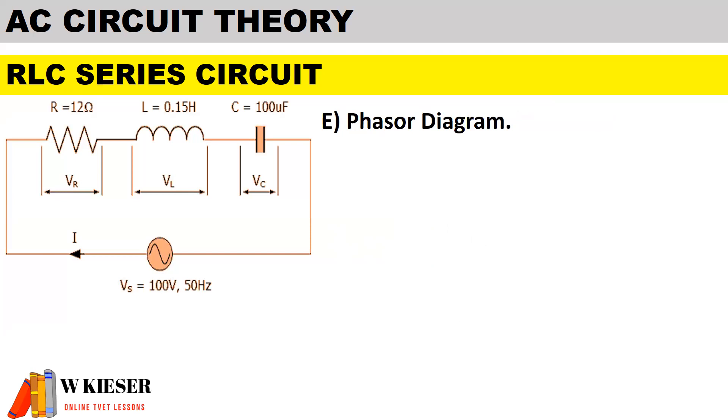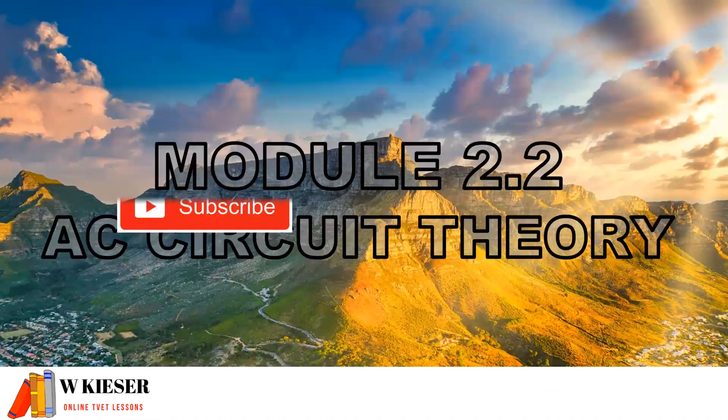To determine the phase diagram, because it's mainly inductive, we have VL on the top, VC on the bottom, with a phase angle of 51.8 degrees. Thanks for watching this video.